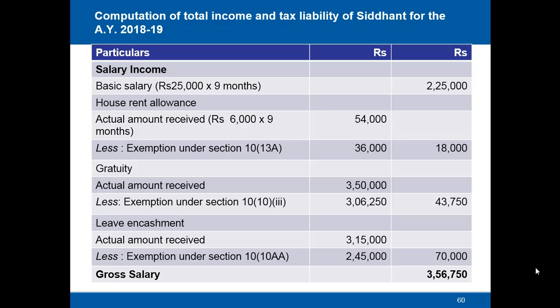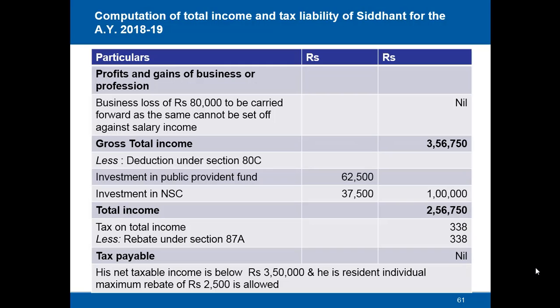Gross salary comes to rupees 3,56,750. Under profits and gains of business or profession, he started a textile business and suffered a loss of rupees 80,000. This loss cannot be set off against salary income and will be carried forward to the next year. So nothing is allowed as a deduction here, and his gross total income remains rupees 3,56,750.